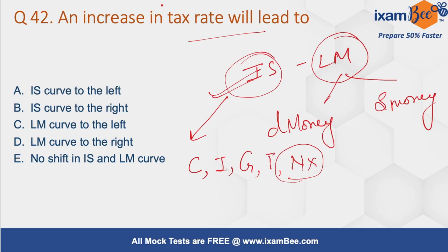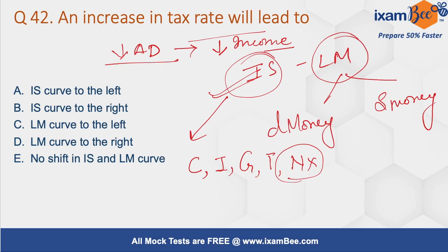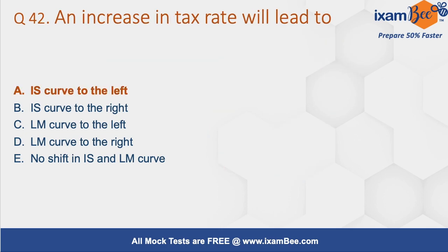If we increase the tax rate, it will lead to a decrease in aggregate demand, and ultimately a decline in income at a given interest rate. There will be no effect on the LM curve, but the IS curve will shift to the left. So the answer here is option A: IS curve will shift to the left.